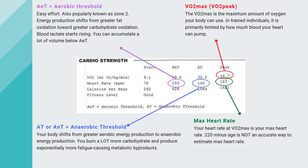Top right, this is your VO2max or VO2 peak — we won't get into that technicality here. Your VO2max is the maximum amount of oxygen your body can use. In trained individuals, this is limited by how much blood your heart can pump.